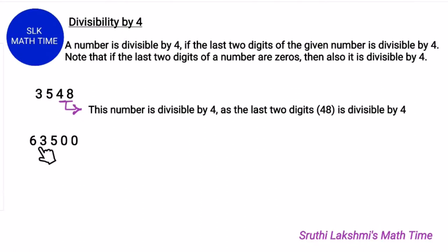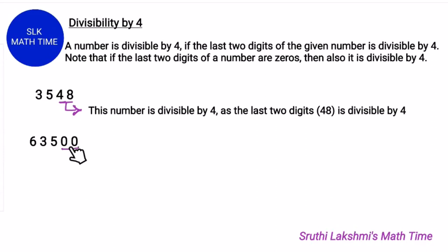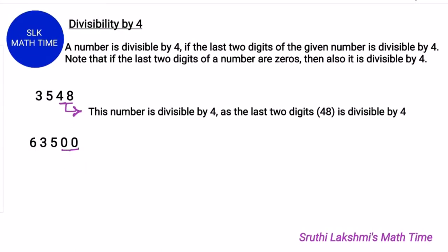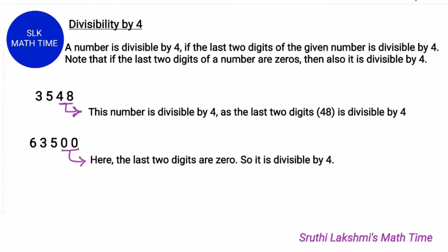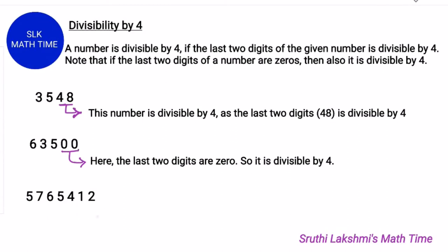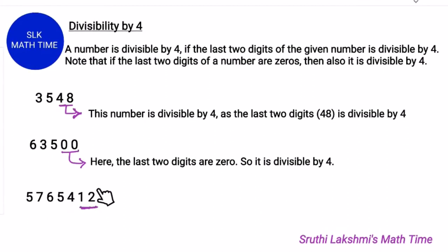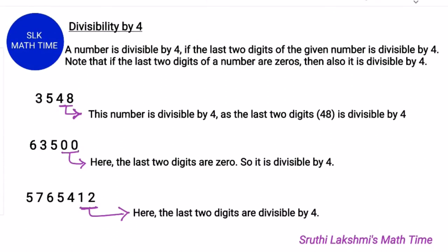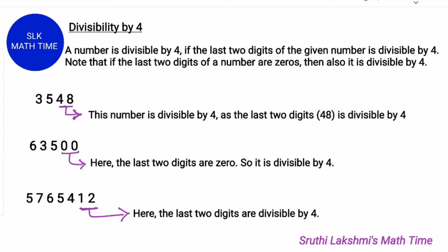Consider the number 63500. Here the last two digits are 0s, and if the last two digits are 0s, it is also divisible by 4. So 63500 is divisible by 4. Next, consider 5765412. Here the last two digits are 12, and 12 is divisible by 4. So this number is also divisible by 4. Isn't this easy?